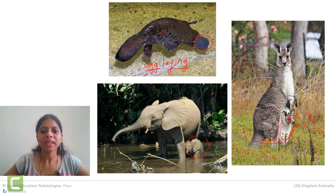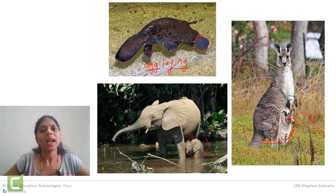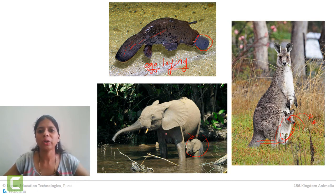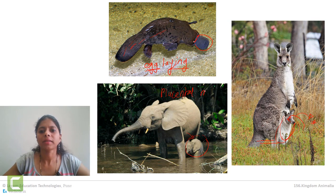Even this baby elephant for a long duration depends on the mother's milk for its food. Basically, elephant gives birth to the child and that child is provided with milk and feeds on it for a long duration. This kind of mammal is called a placental mammal.